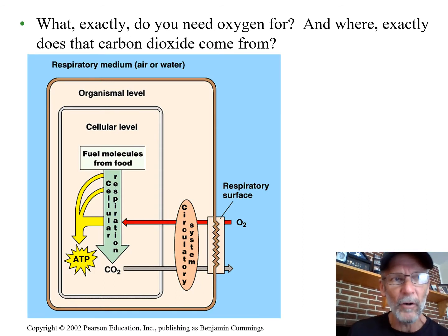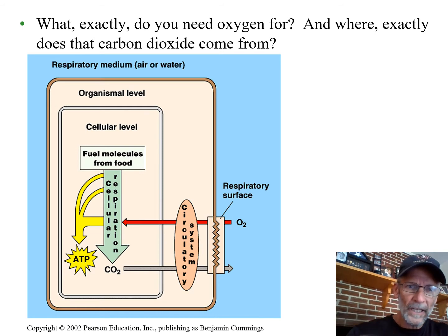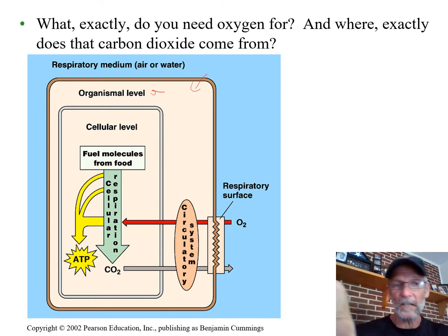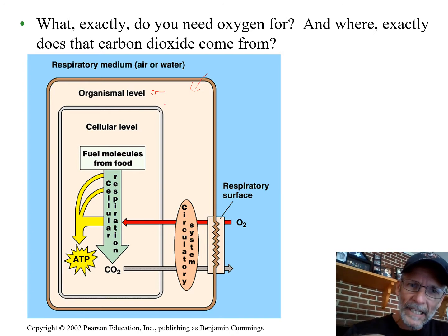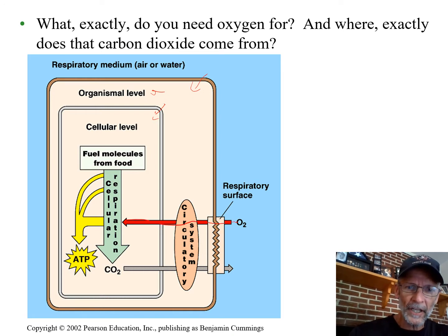I like these diagrams that show a whole lot of things all at once — they show big system-level things. They have the organism level represented by this box, which is kind of like a cell, but this would be the whole organism. And then this would be each and every cell in that organism's basic ideas. And here it is: oxygen in, carbon dioxide out.